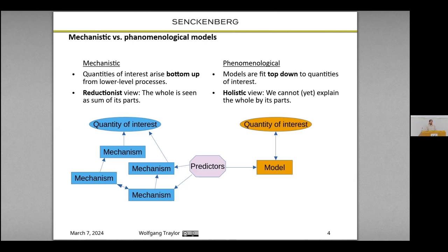On the other side, we have phenomenological models, or correlative models and statistical models, and they follow a top-down approach where we have a quantity of interest that is then used to fit the model — for example, a generalized linear model — in order to predict it for new environments. And of course, both need some kind of predictor variables.